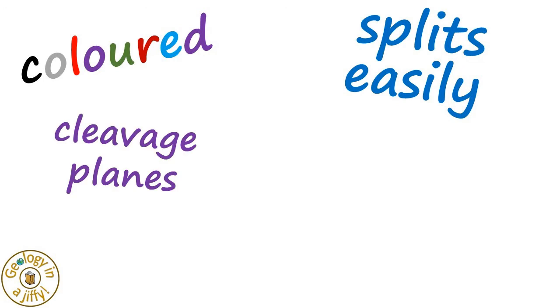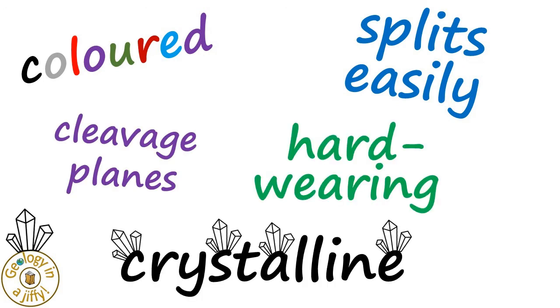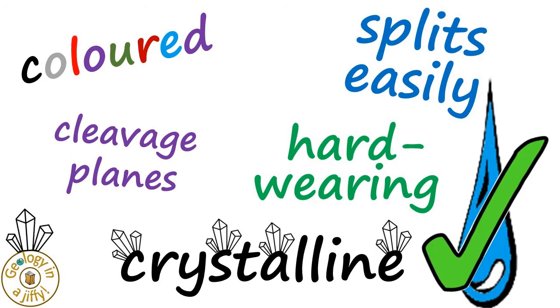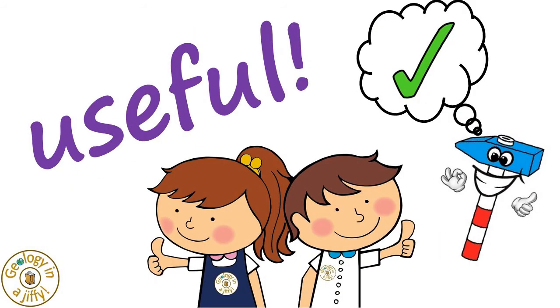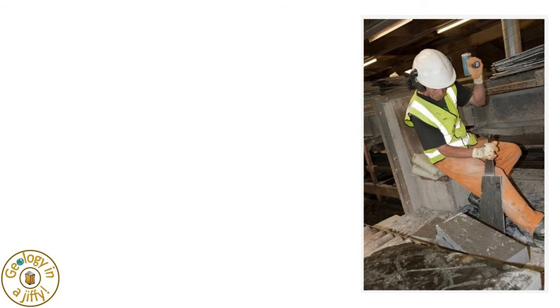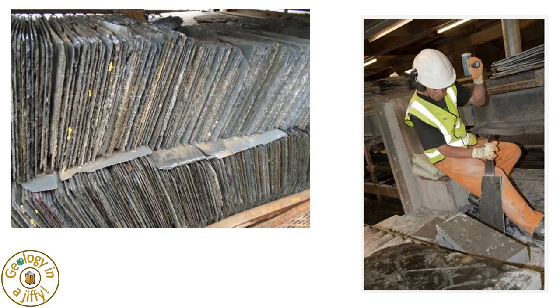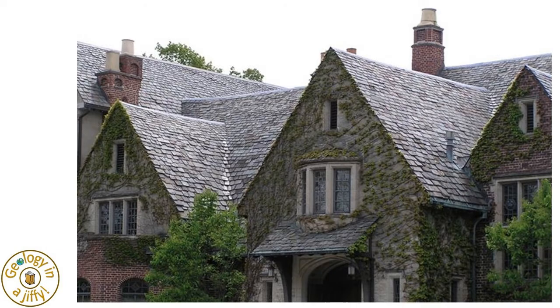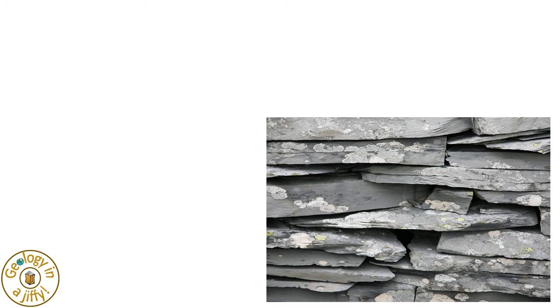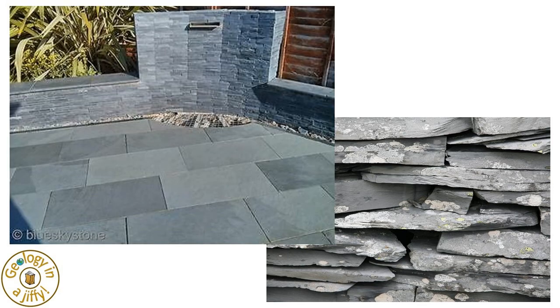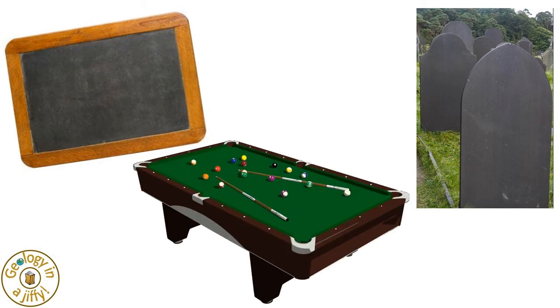Slate, with its properties of being coloured, splitting quite easily along cleavage planes, being crystalline, hard-wearing, and waterproof, is very useful. This modern day worker is splitting slate rock to make slates, stacked in a neat pile ready to use as roof slates or tiles. Slates can be roughly cut to make blocks to build dry stone walls, or can be sawn, carved and polished to make beautiful walls and paving, gravestones, or used to write on, and is even used to make the smooth surface of snooker or pool tables.